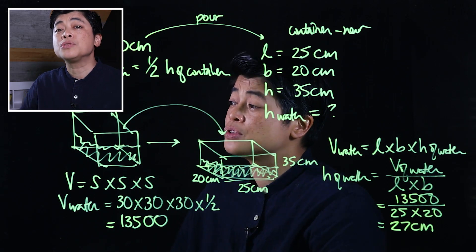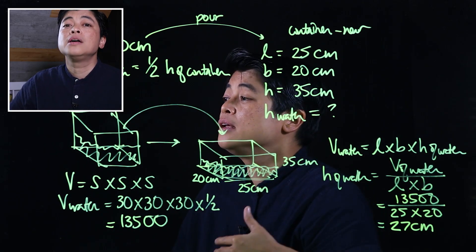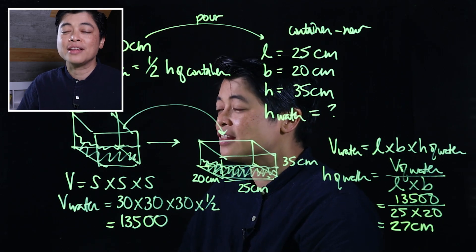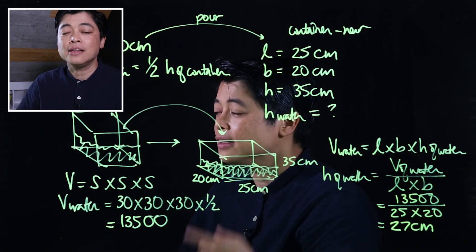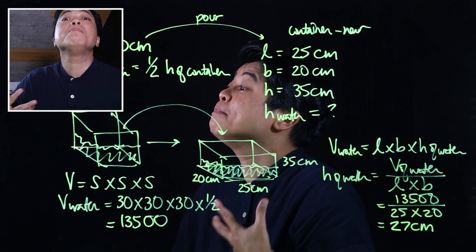Remember: write down the givens, write down the formulas, and make sure to use your calculator because some of the numbers here are greater than what the head can manage. That concludes Lesson 2 of Chapter 8, which also concludes the chapter, the module, and our year. I hope these teaching strategies have helped you in teaching your kids, and I hope you've enjoyed your learning journey with us.